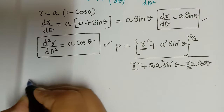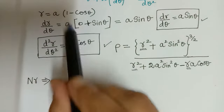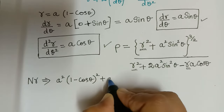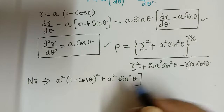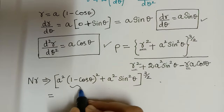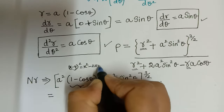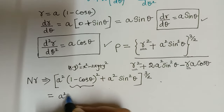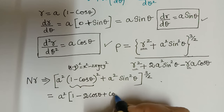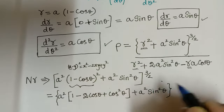First let us evaluate the numerator. The numerator is r squared, so r is a(1 − cos θ), giving a² times (1 − cos θ)² plus a² sin² theta, whole to the power of 3/2. We can expand (1 − cos θ)² using the formula (x − y)² = x² − 2xy + y², giving a²(1 − 2 cos θ + cos² θ) plus a² sin² theta, whole to the power of 3/2.